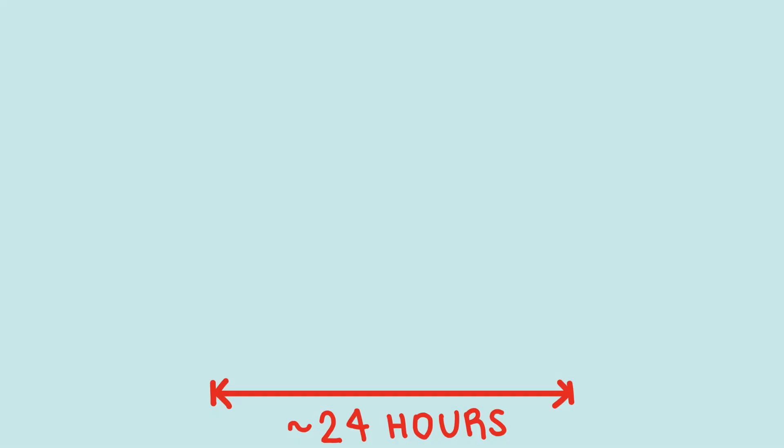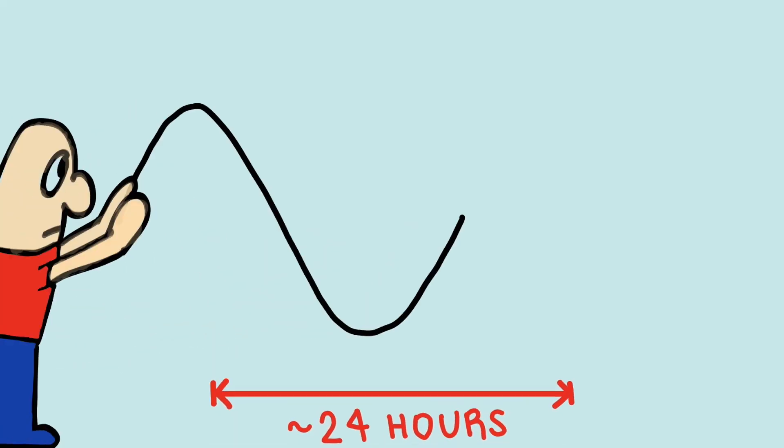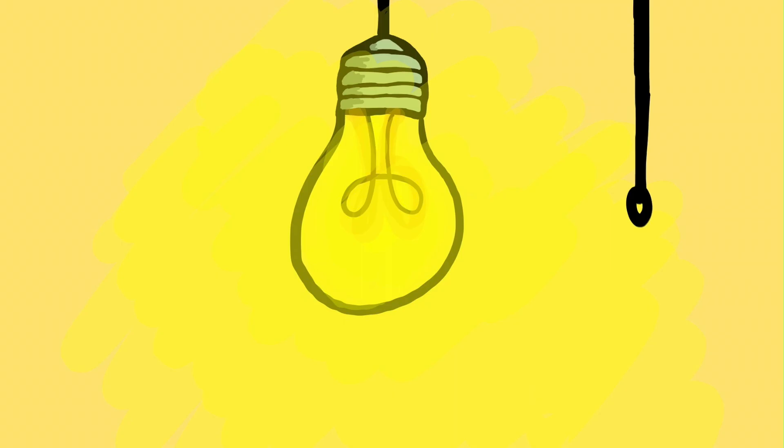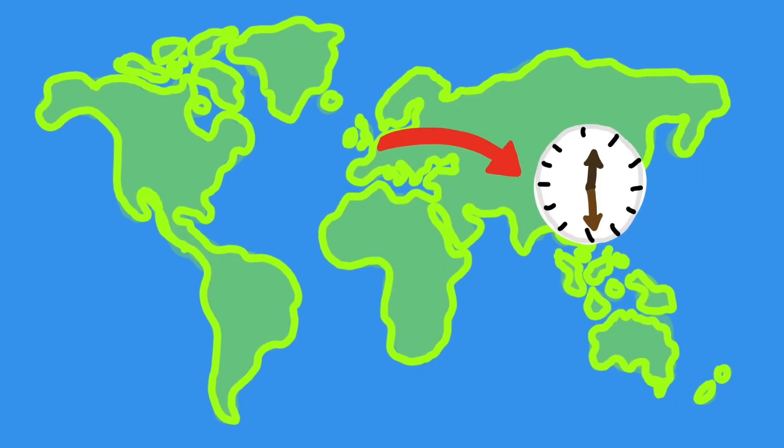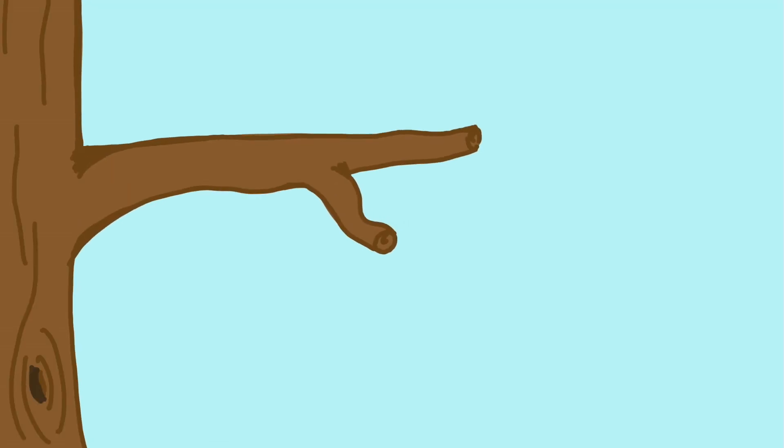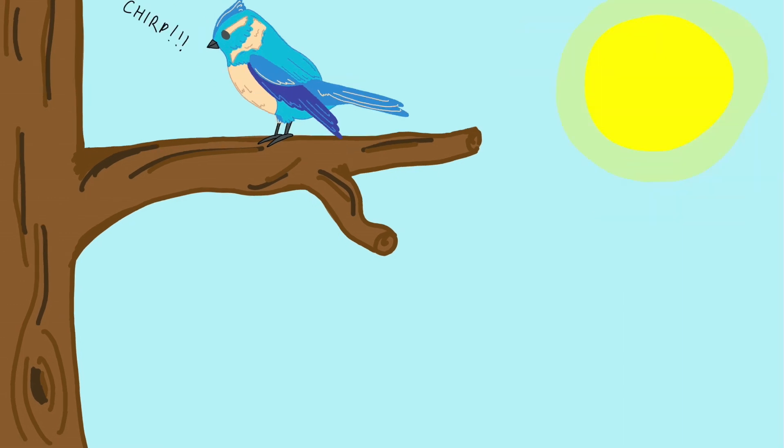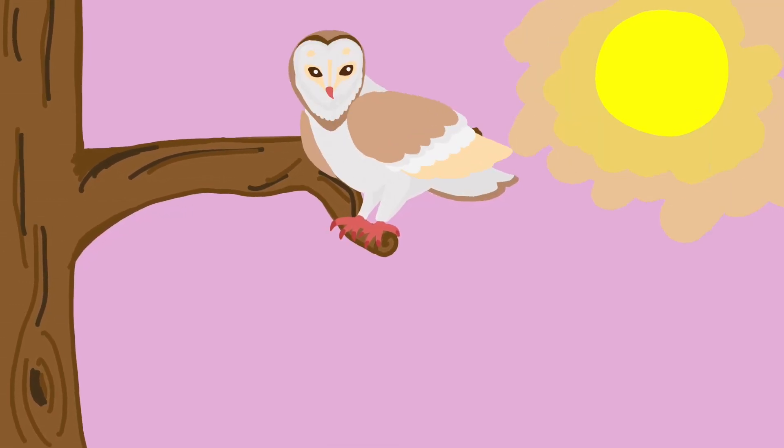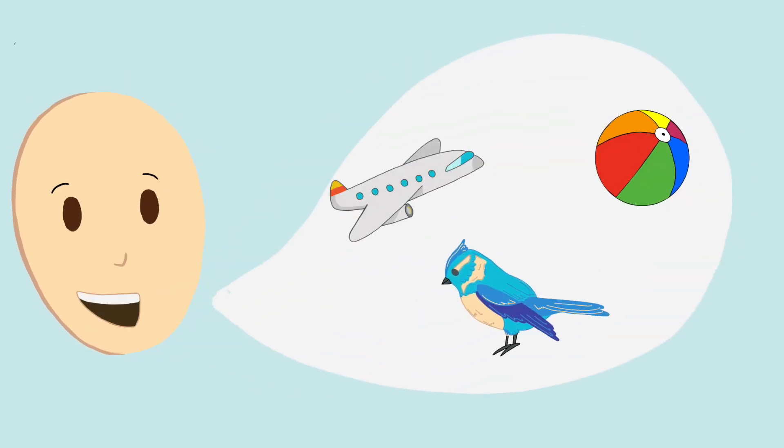So why not adjust your circadian rhythm beforehand? This could be by regulating the times when you expose your body to bright light or by adjusting your bedtime to match the time zone that you are traveling to. Some studies have shown that bright morning light may help you adjust to an earlier time zone and bright evening light could help you adapt to a later time zone. This could help you arrive home full of energy and ready to tell your friends what a fantastic time you've had.